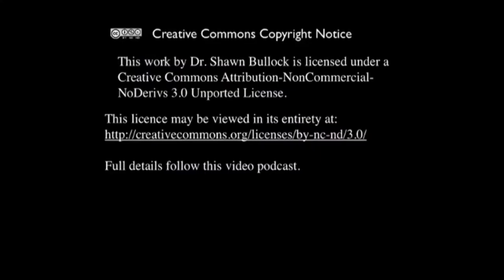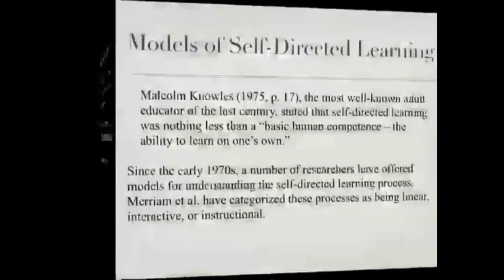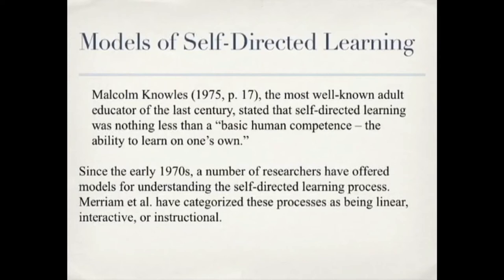Part two: Models of self-directed learning. The consensus in the adult education literature is that self-directed learning is a process that most adults engage in. Malcolm Knowles, the most well-known adult educator of the last century, stated that self-directed learning was nothing less than 'basic human competence — the ability to learn on one's own.' Many adult education theorists believe that the ultimate goal of any adult educational experience should be fostering the ability of a learner to become more self-directed. Since the early 1970s, a number of researchers have offered models for understanding the self-directed learning process. Merriam et al. have categorized these processes as being linear, interactive, or instructional. In this video podcast we will take a look at characteristics of linear and interactive models of self-directed learning.